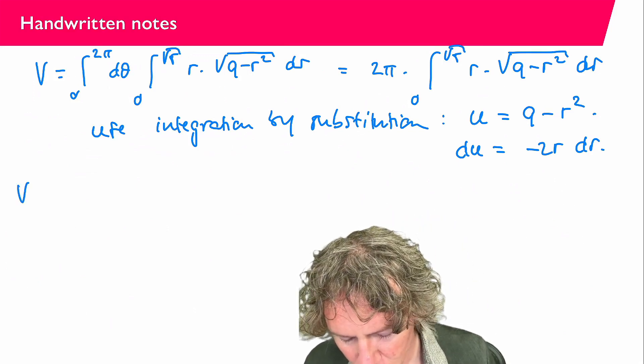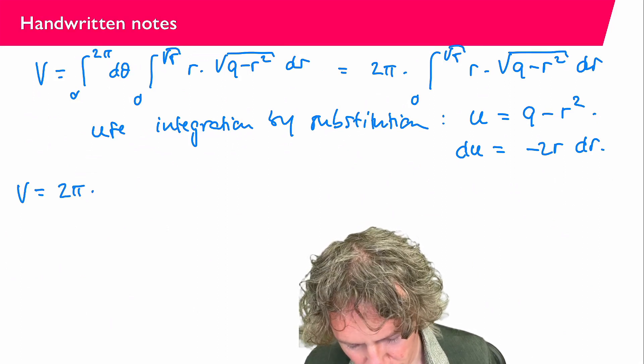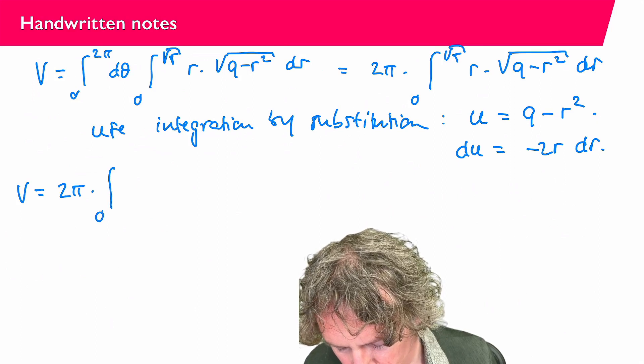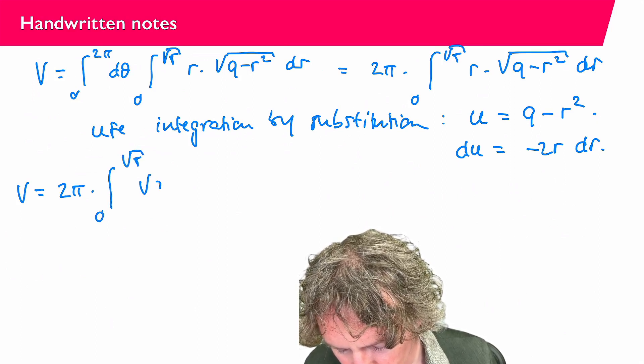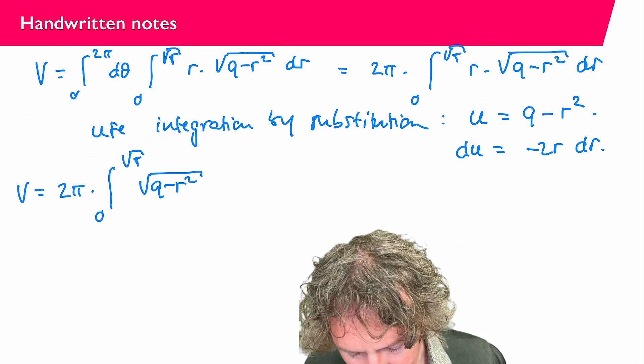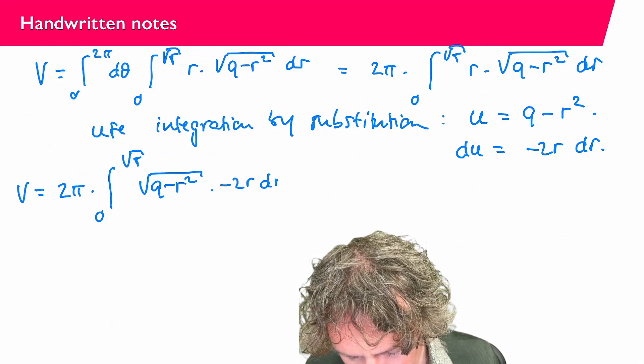Because now I find that V equals 2 pi times. And then let's rewrite this a little bit. So I'm going to write this as 0 square root of 5. Square root of 9 minus r squared. I would like there to be a minus 2 r d r.